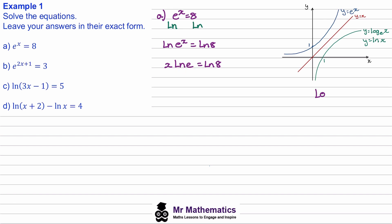If we think about what's going on here, this is the log of e to the base of e, and we know this is 1. If we write this in exponent form, we've got e to the 1 equals e. So this equals 1, and we can cancel out the natural log of e, because we just have x times 1. So this cancels and we have x equals the natural log of 8. That is our solution.